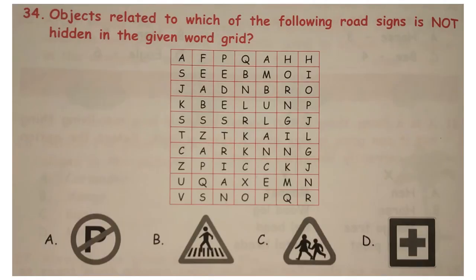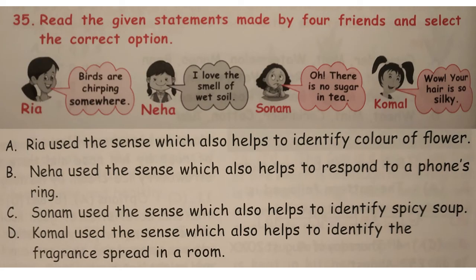Question number 34: objects related to which of the following road signs is not hidden in the given word grid? Answer is option C.